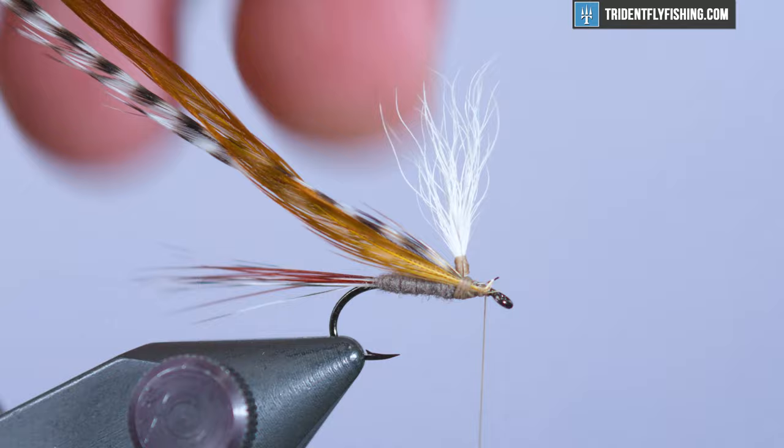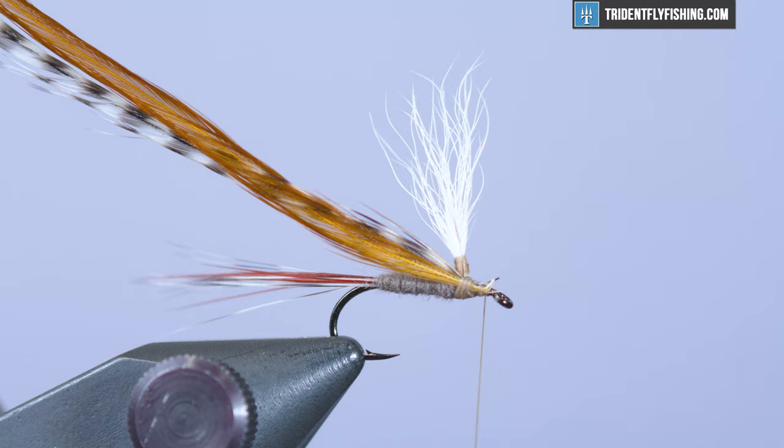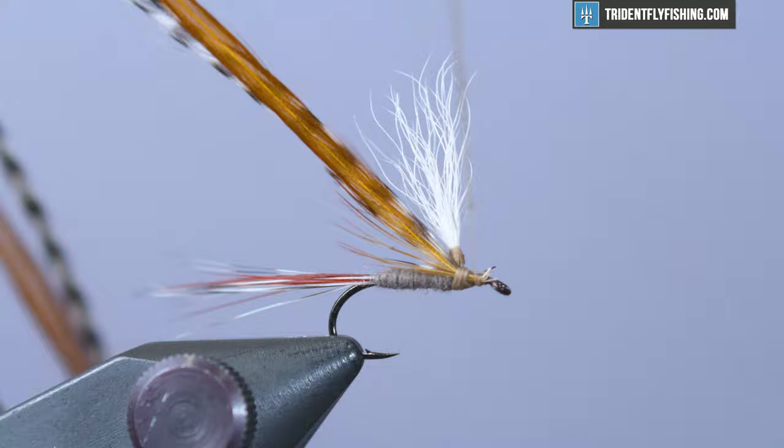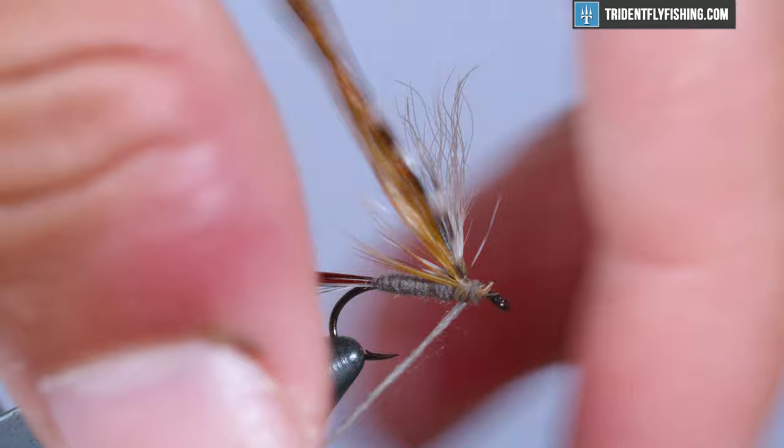This is optional, but I like to do it. I think it cleans up the fly just a little more. Just go in with a little tiny bit of dubbing on your thread and just clean up that thorax. Again, you don't need to do this, but I think it just makes for a better fly that's overall a little more uniform.